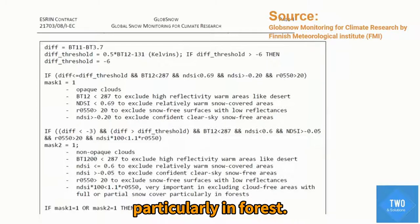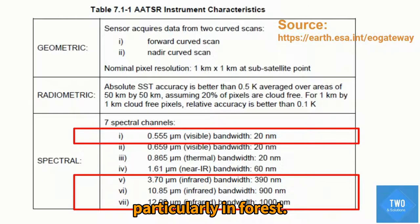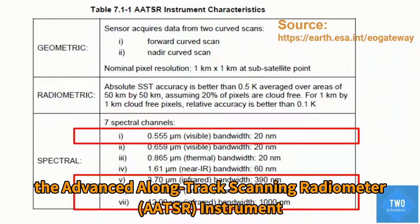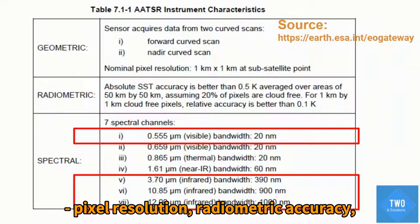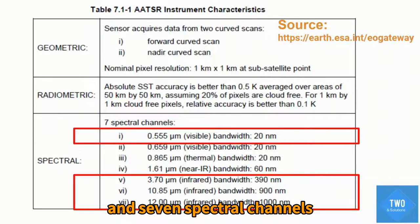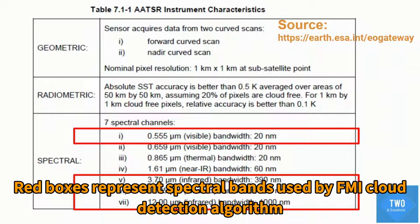Or snow cover particularly in forest. This is the specification of the Advanced Along-Track Scanning Radiometer, the AATSR instrument — including pixel resolution, radiometric accuracy, and 7 spectral channels. The red rectangle represents the bands used in the FMI cloud cover detection algorithm.